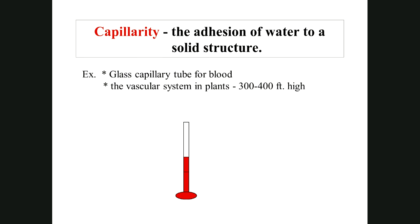We have capillary tubes that we use to take up blood for things like donating blood or for doing a hematocrit, where you find out the amount of red blood cells versus plasma in your blood. Blood is actually sucked up into a glass capillary tube by capillarity, but only up to a certain distance.